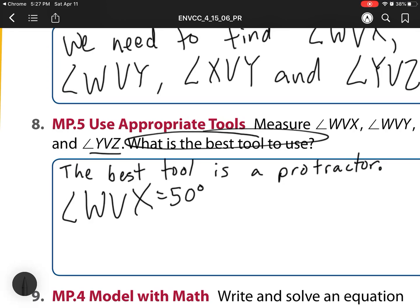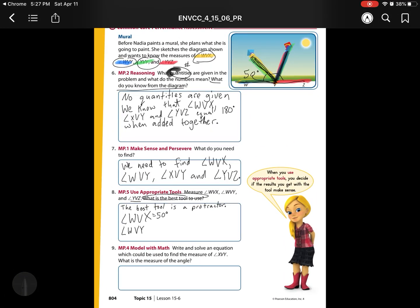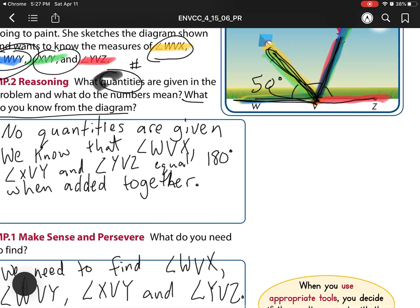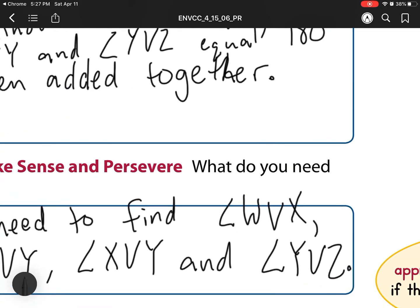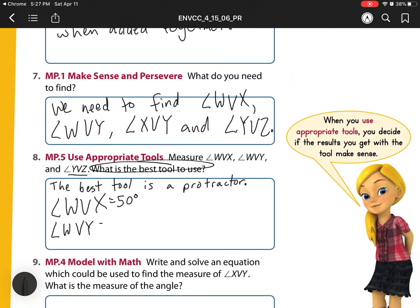Then we have angle WVY, which when I look up here, WVY is that blue one. So we have WVY right here. And what was that angle? Well, that is 110 degrees when we use our protractor to measure.